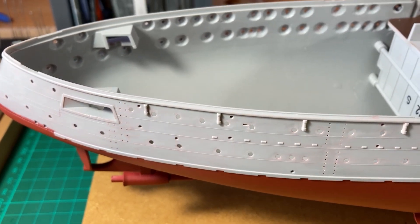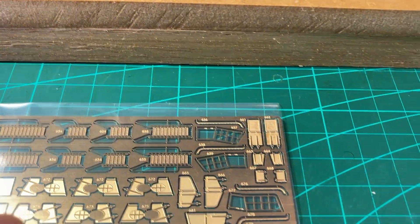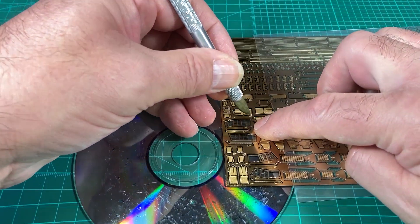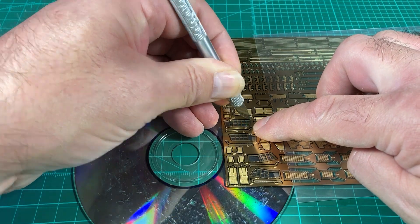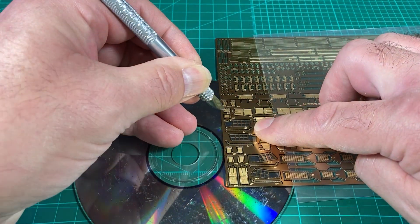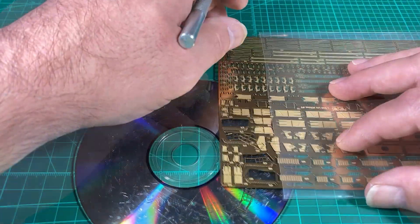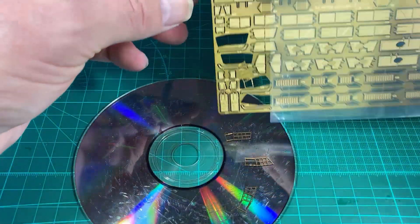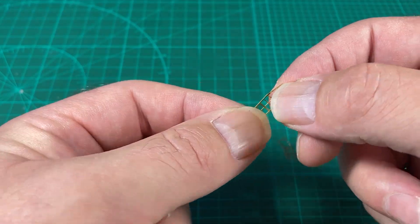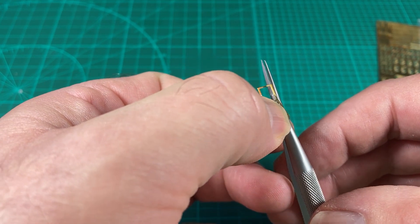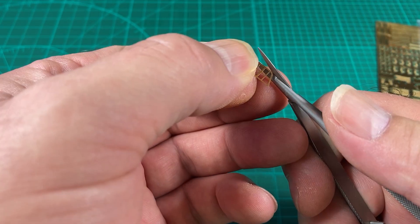For the three-inch guns front and back, we need to install some framework which is on fret nine. These window-type things here. We'll just cut off the nibs as we've done before using a hard plate to cut against, then use the full white scissors to cut off the nibs.